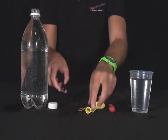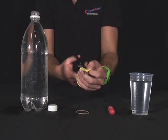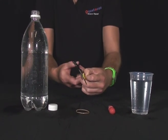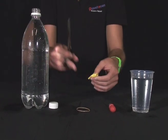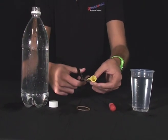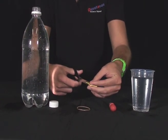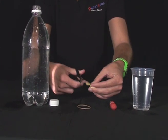Next, using the scissors you want to cut off the neck of the balloon just like so. Now using the scissors you want to cut some strips into that neck of the balloon just like I'm doing here.